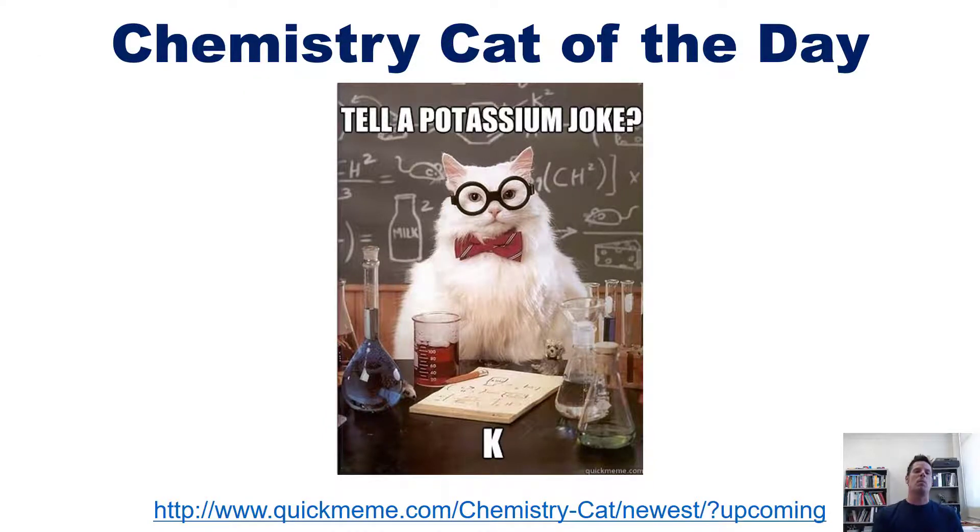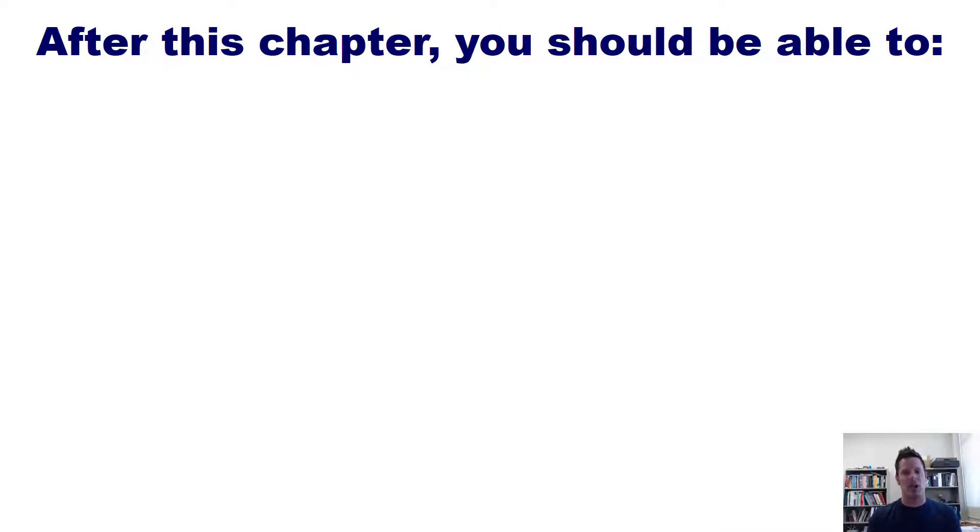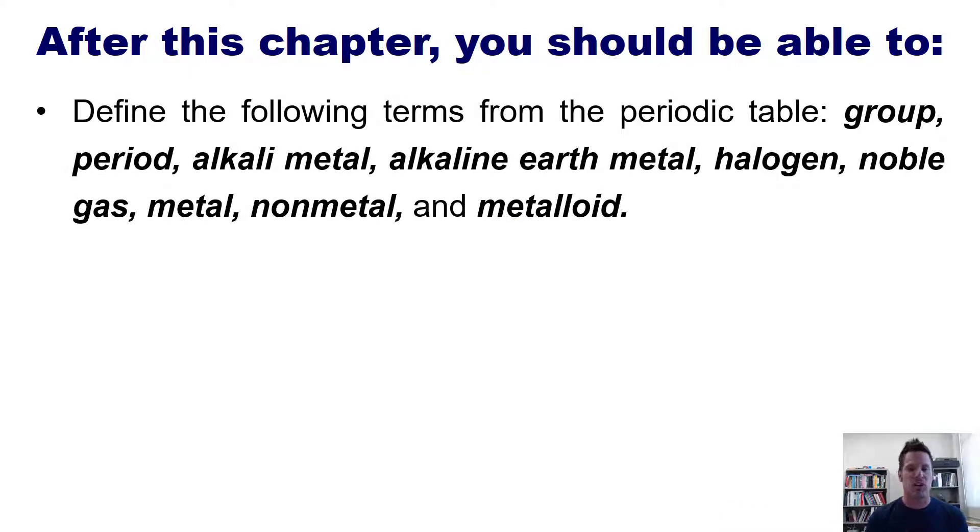By the time we get to the end of this chapter, you should have the following skills. First, define the following terms on the periodic table - in other words, you should be able to define all of these terms on this list of vocabulary that I'll let you read.